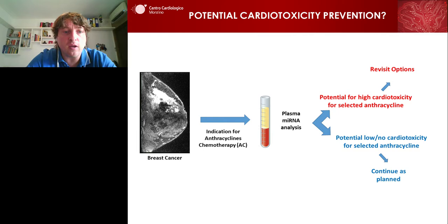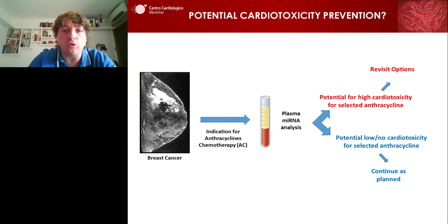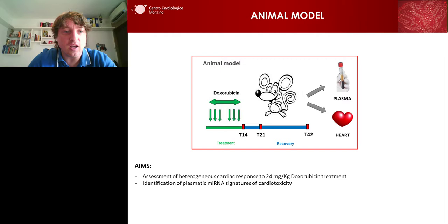So we came up with a possible algorithm for future studies, which could be a proposal for future clinical applications. Breast cancer subjects with indication for treatment with anthracyclines would undergo plasma microRNA analysis, which indicates whether there is potential risk for a certain selected anthracycline. In the case of potential high risk, clinicians could revisit their options and select another kind of drug. In the case of no indicated potential cardiotoxicity risk, the treatment could continue as planned.